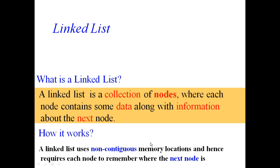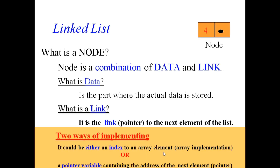What is a node? A node is a combination of two things: data and the link. Data is the part where the actual information or value is stored. Link is the part of the node where we store the address of the next element.